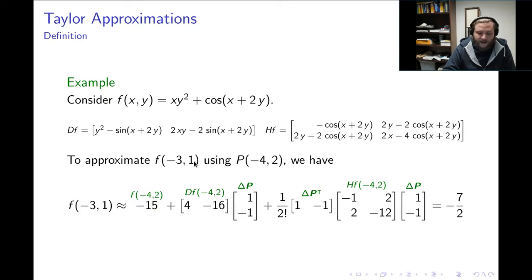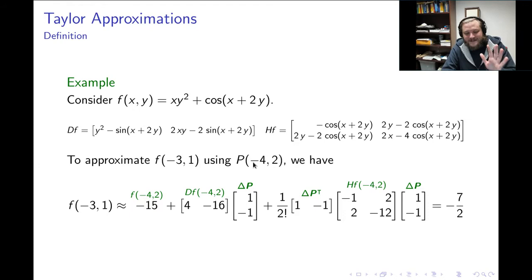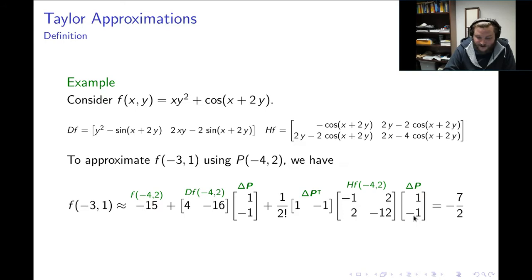Now, I'm focused on the point negative 4, 2, and I want to use data at negative 4, 2 to approximate f of negative 3, 1. My approximation of f of negative 3, 1 can be given by my second-degree Taylor polynomial. This will be my original output, that's f of negative 4, 2, which happens to be negative 15 — that's what I get by replacing x equals negative 4 and y equals 2 in my original expression for f.